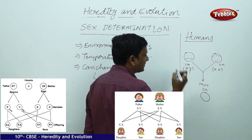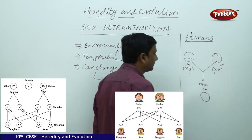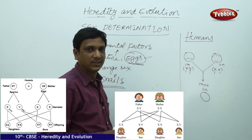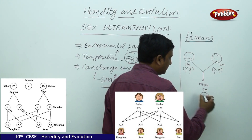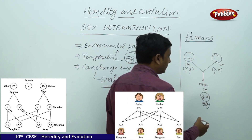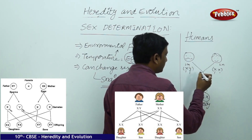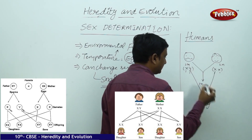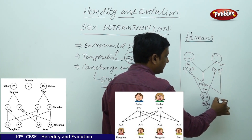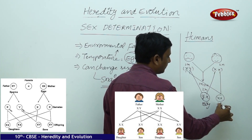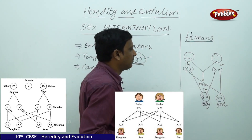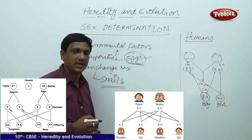Each parent contributes one set, and they cannot contribute two sets. So if the mother contributes X and the father contributes Y, it will be a boy — the XY combination. If the father contributes X and the mother contributes X, it is XX — a girl. So it is in the hand of the father whether the born baby will be a boy or a girl; it is determined only by the father.